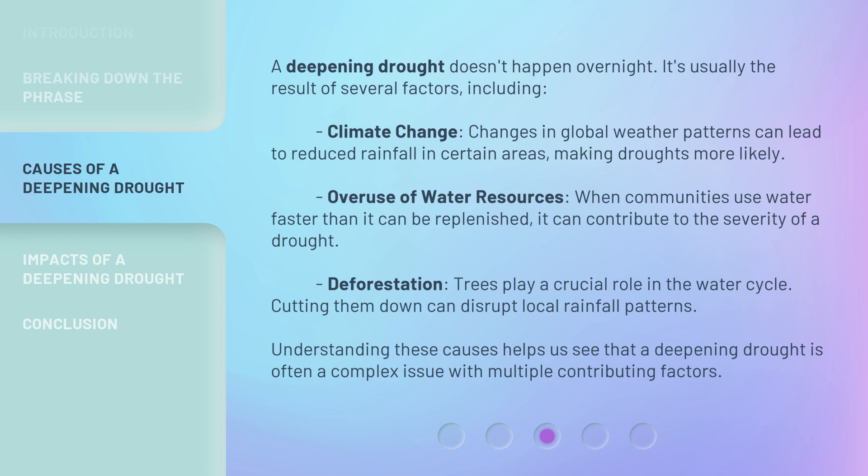Deforestation is another factor. Trees play a crucial role in the water cycle, and cutting them down can disrupt local rainfall patterns. Understanding these causes helps us see that a deepening drought is often a complex issue with multiple contributing factors.